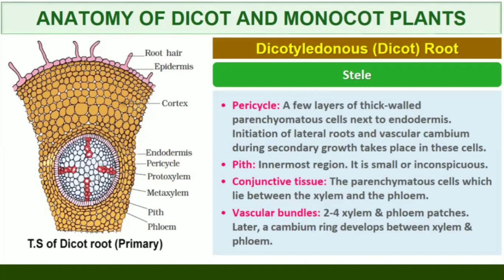There are usually two to four xylem and phloem patches. Later, a cambium ring develops between the xylem and phloem. All tissues on the inner side of the endodermis such as pericycle, vascular bundles, and pith constitute the stele.